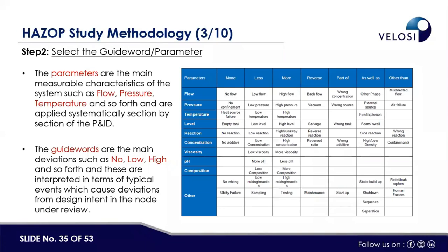For reaction parameters: in batch processes this is definitely applicable; if there is no reaction in a particular node, it is marked not applicable. For concentration changes: if two or three chemicals are mixed within the node, changes in concentration can occur. For viscosity: temperature increase or decrease can have an impact on viscosity, which is covered here or referenced to the temperature deviation. For composition changes and utility failures: instrument air failure is studied — whether instrumentation in the system is designed in fail-safe mode.